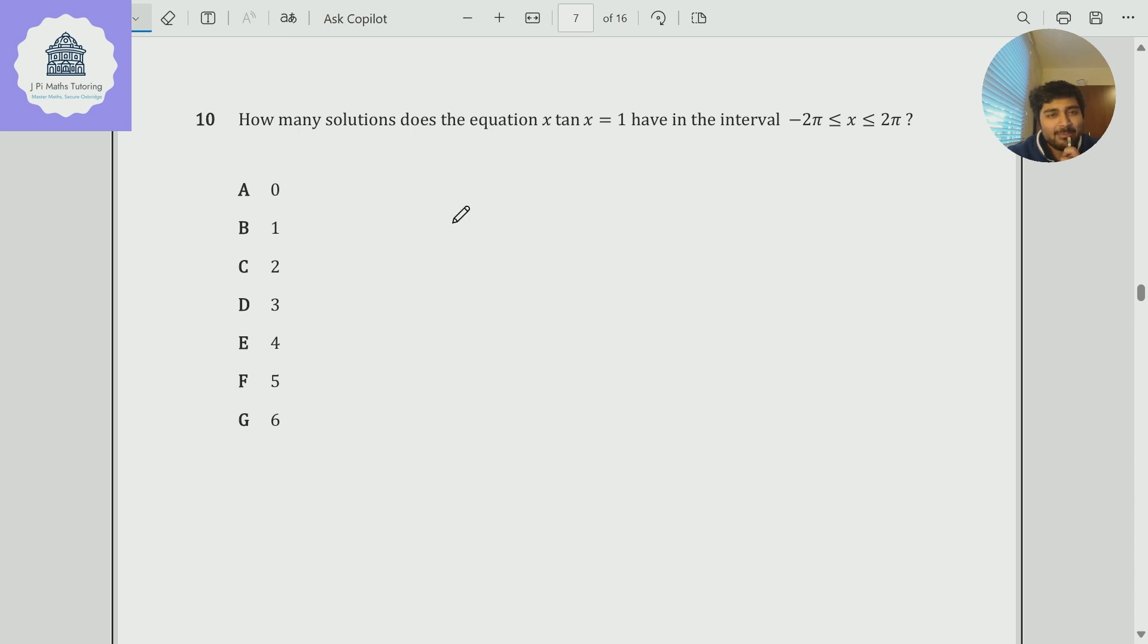This problem comes from the TMUA. How many solutions does the equation x tan x equal 1 have in the interval x is between minus 2π and 2π? We've been given seven options here, 0 through 6.